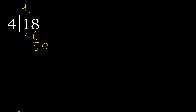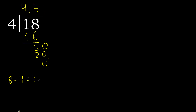4 multiplied by which number gives 20? 4 multiplied by 5 is 20, which is not greater. Subtract: the remainder is 0, therefore finish. Therefore, 18 divided by 4 is 4.5. Finish.